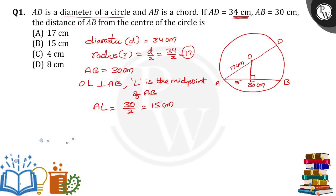If we observe carefully, there is a right angle triangle. What is that right angle triangle? It is OAL, where angle L is equal to 90 degrees. So OA is given as 17 cm and AL is given as 15 cm. Now we have to find out the measurement of OL.